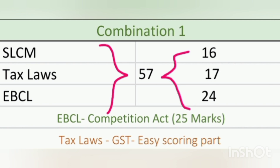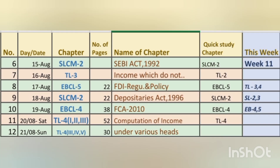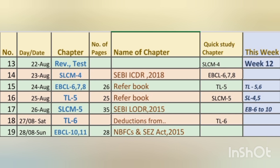For the first week of combination two — the tenth week of the overall timetable — we will be studying two chapters in Tax Laws, three chapters in EBCL, and one chapter in SLCM, with revision and test at the end of the week. For the second week, two chapters in Tax Laws, two in EBCL, and two in SLCM. I have included the fourth chapter of Tax Laws — computation of income under various heads — for Saturday and Sunday, as it is a very important chapter. The revision and test session is postponed to the next Monday.